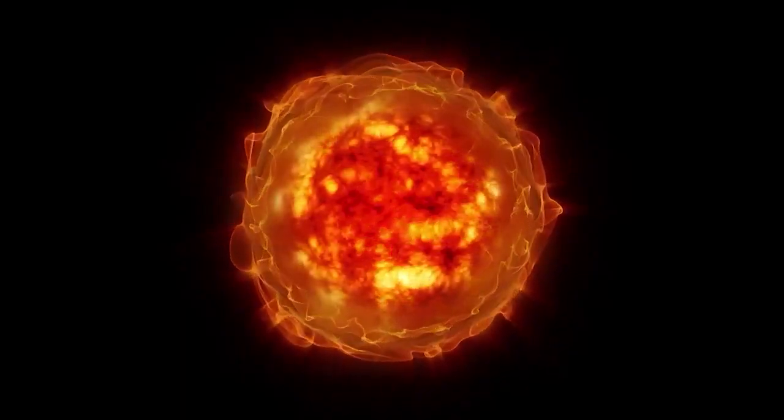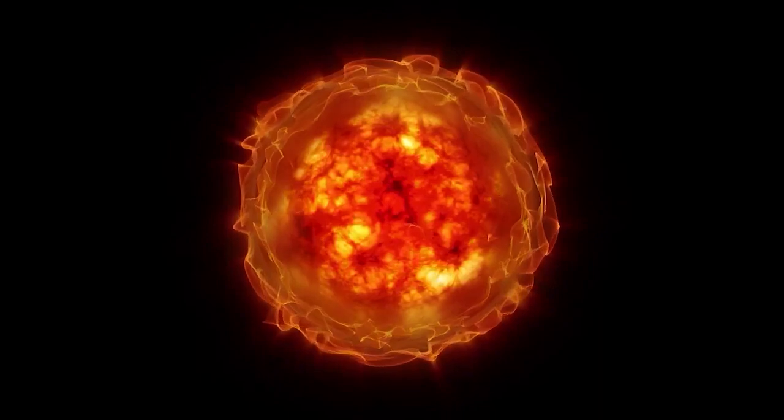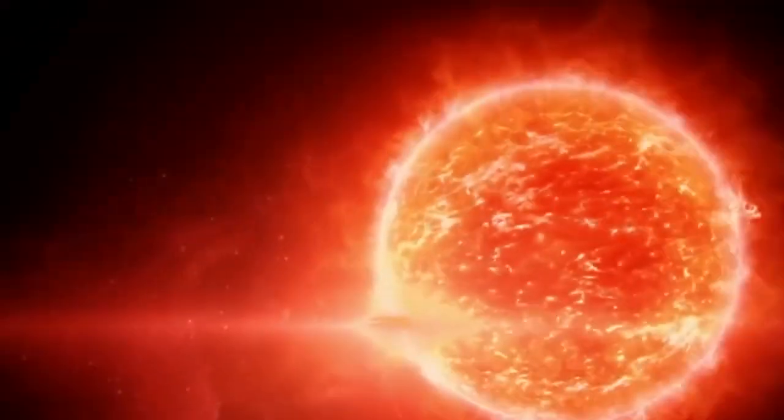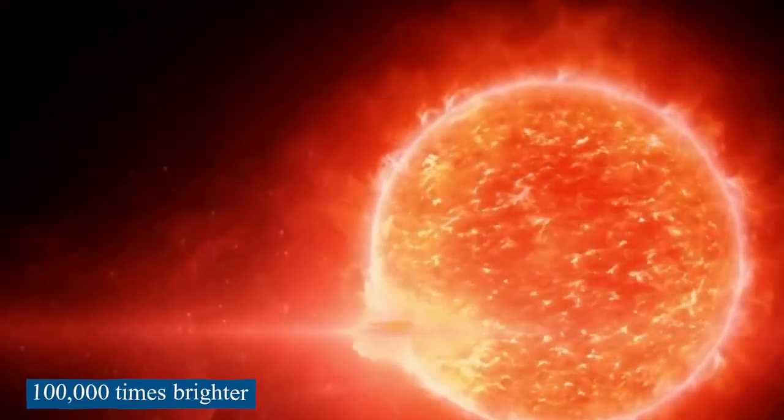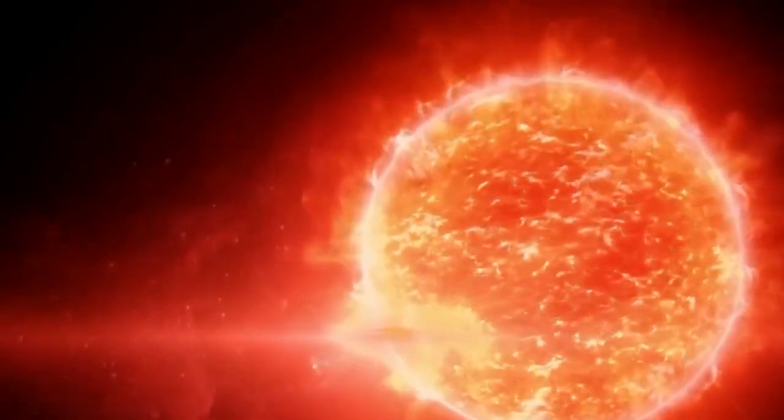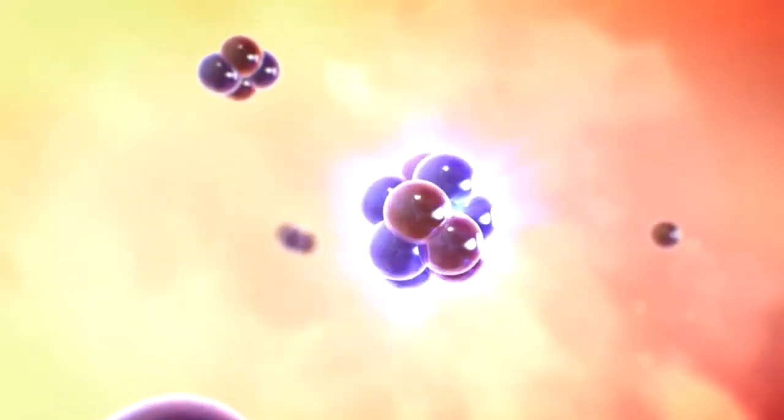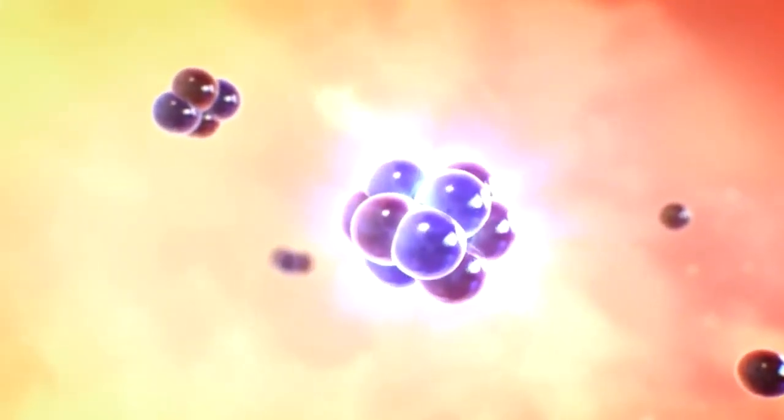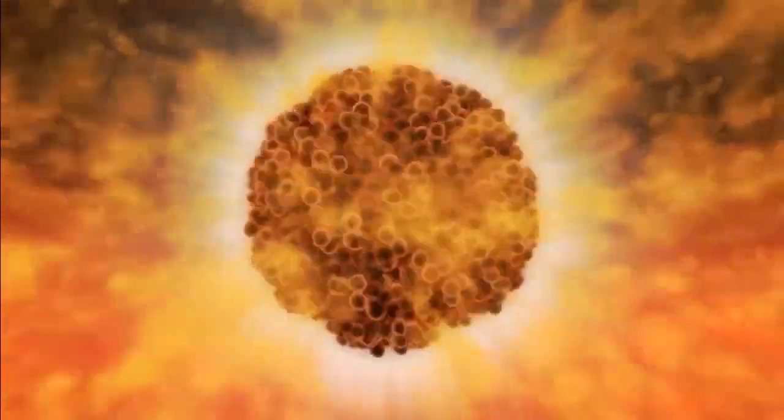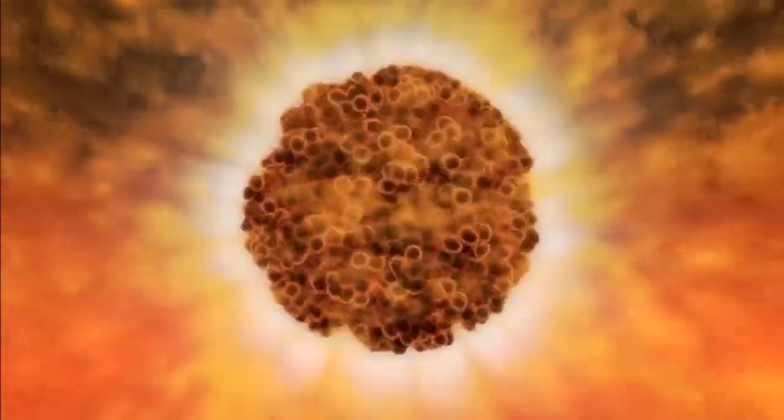Even though Betelgeuse is far away, it is one of the brightest stars in the Earth's sky because it is very bright on its own, about 100,000 times brighter than our Sun. Betelgeuse has so much energy that it burns through its fuel quickly, which speeds up the end of its life. Some day soon, the star will run out of fuel, fall apart from its own weight, and then explode in a supernova.